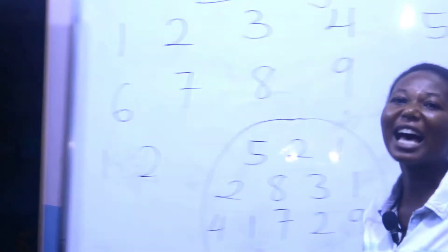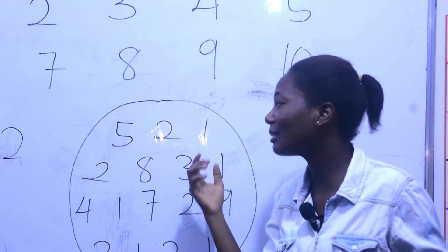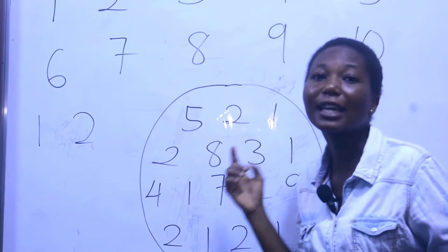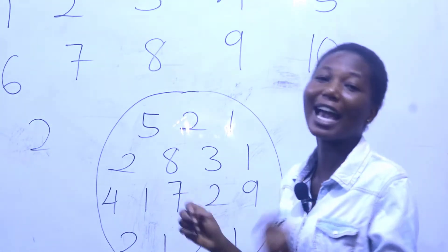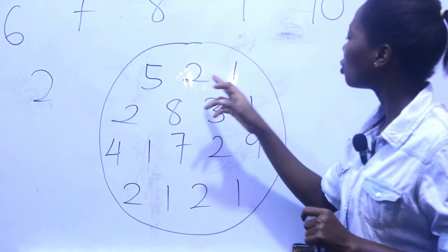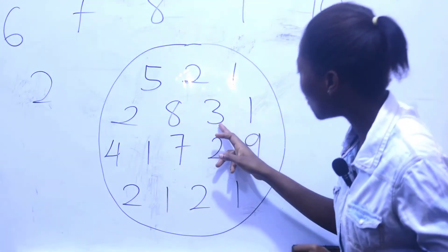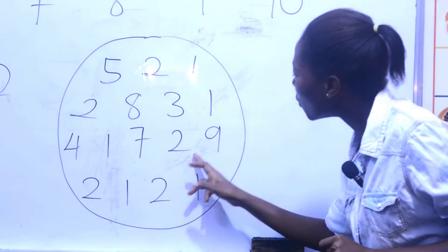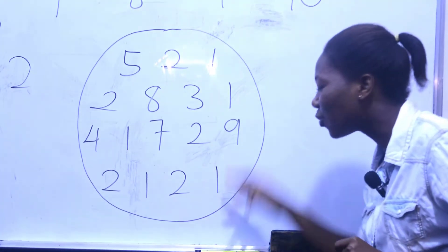Now over here I've mixed some numbers with one and two. We are having numbers mixed with one and two, so we are going to identify and circle one and two. When we look at the numbers over here, we have: five, two, one, two, eight, three, one, four, one, seven, two, nine, two, one, two, and then one. Very good, you guys are really doing well.